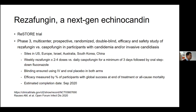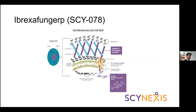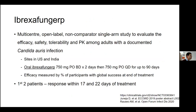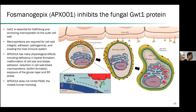Ibrexafungerp belongs to the triterpenoid class, structurally different from echinocandins and interacting differently with beta-glucan synthase. It is an oral and IV agent, useful for long-term treatment and for multidrug-resistant pathogens including Candida auris infections.